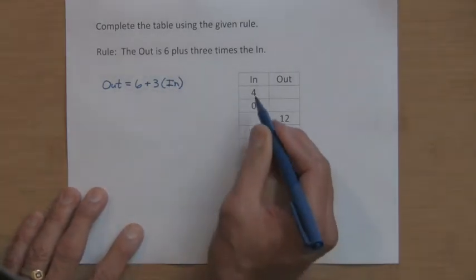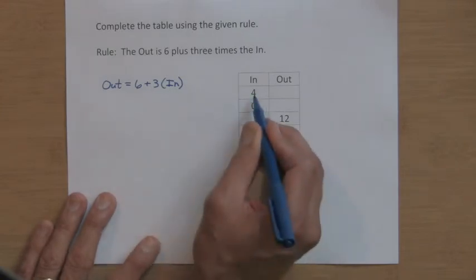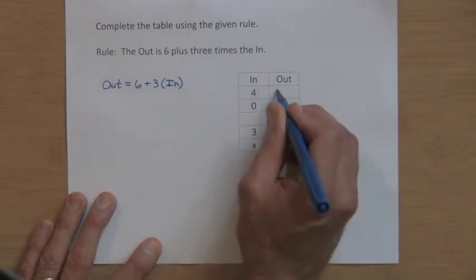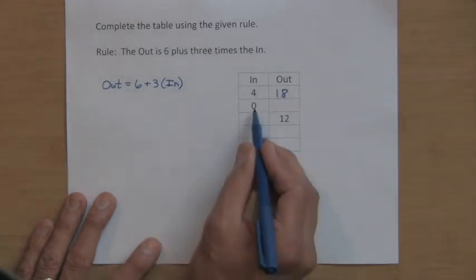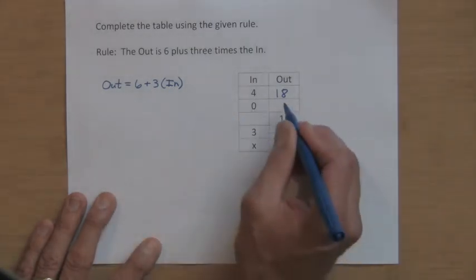Let's fill it in. If the in is four, three times four is 12, plus six more gives you an out of 18. If the in is zero, three times zero is zero, plus six is six.